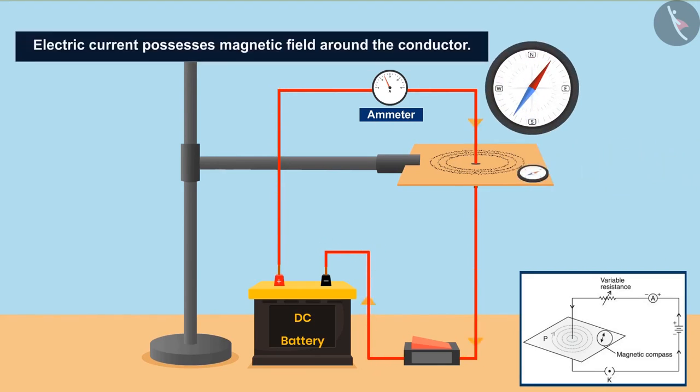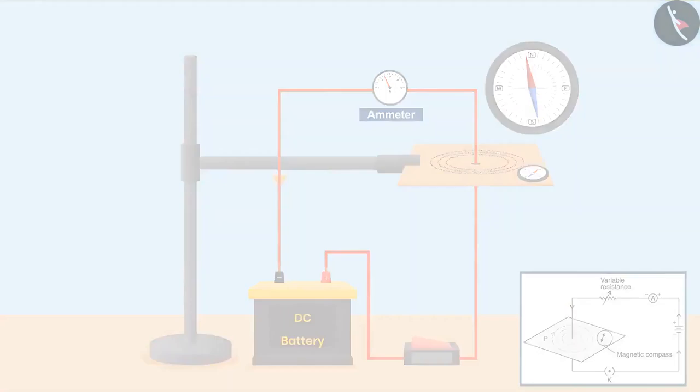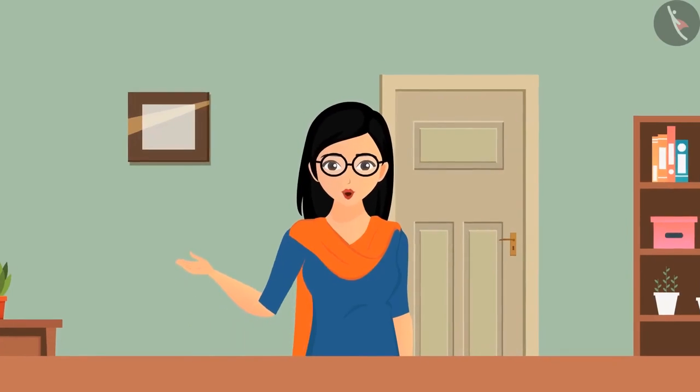Hence it is proved that the electric current possesses magnetic fields around the conductor. But if we increase the electric current, then what will happen? The deflection also increases, and the strength of magnetic field lines also increases. Also, if we reverse the direction of the current, then the direction of field lines also gets reversed.